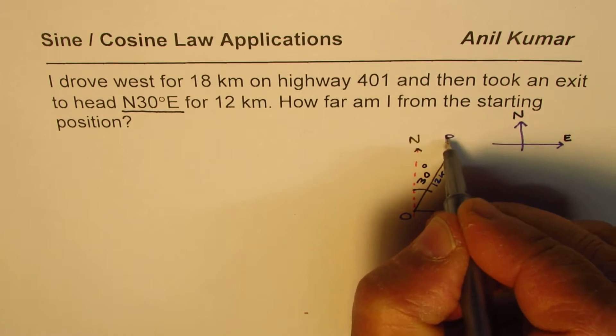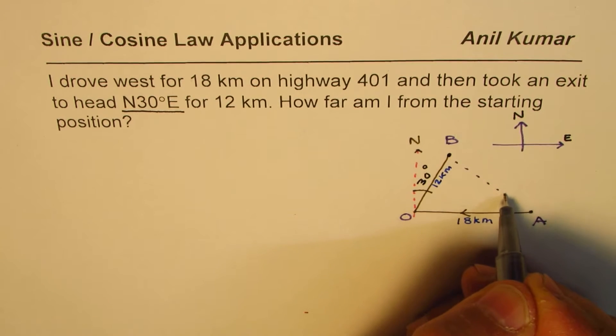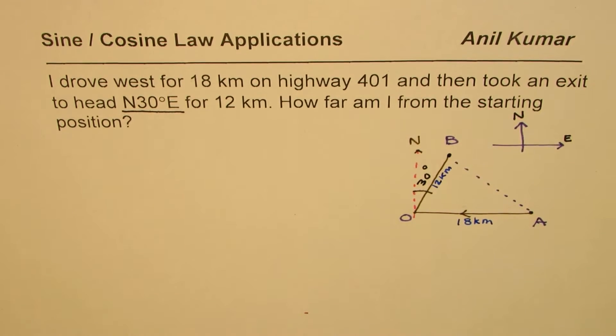I need to find, let's say this is the starting position A. We turn from this point O and reach point B. We need to find this distance between A and B. I hope this sketch clearly displays the information given in the question. You can pause the video and find the length AB.